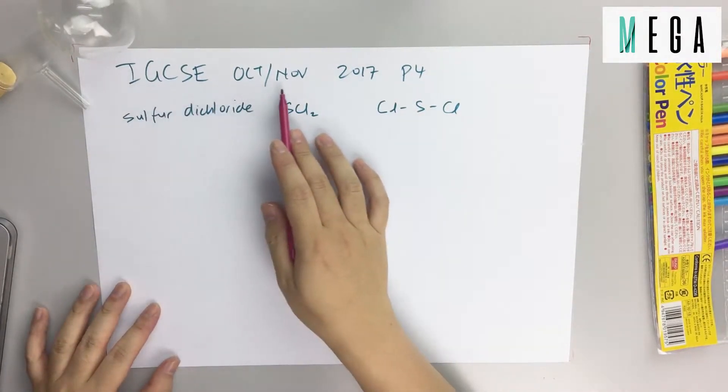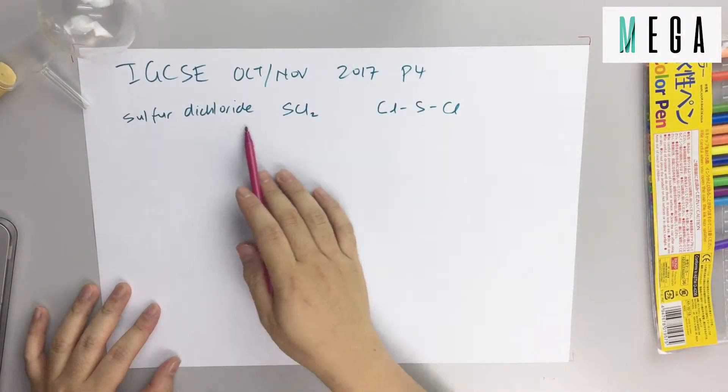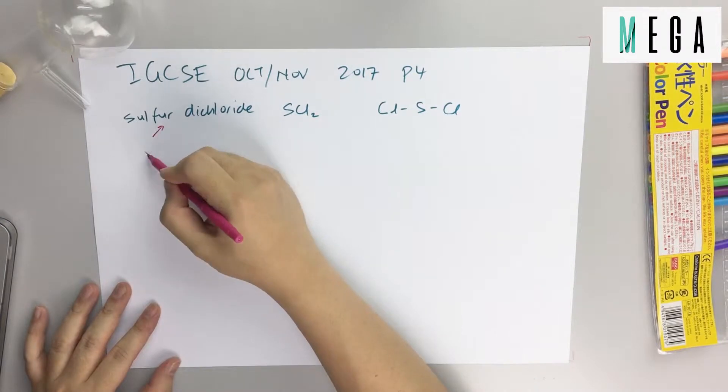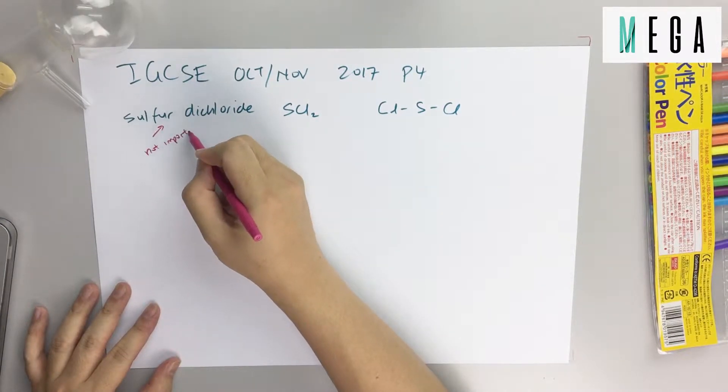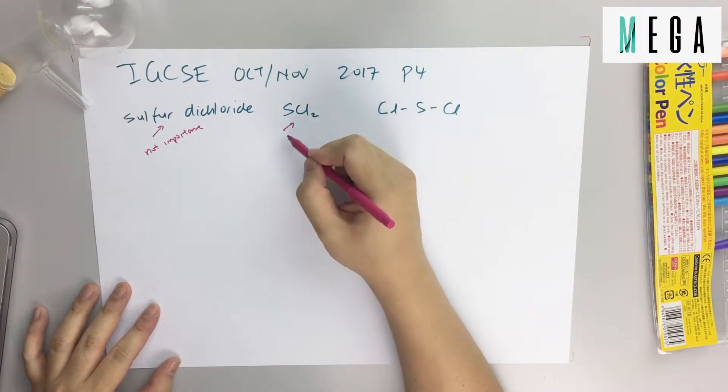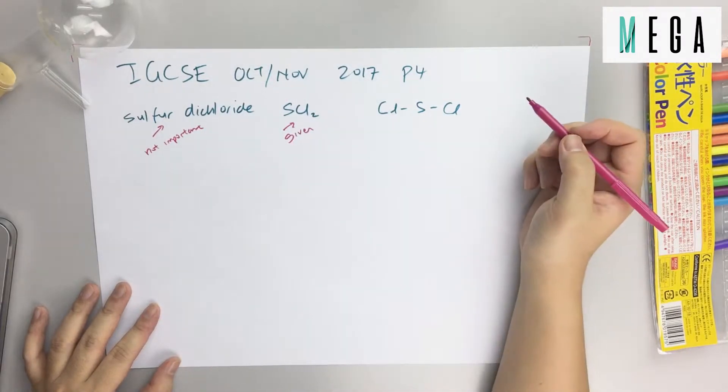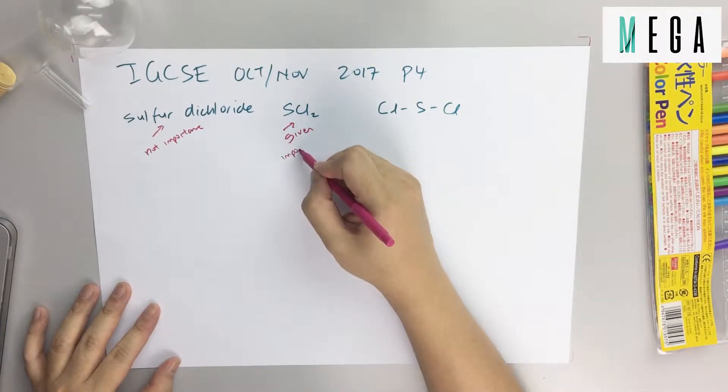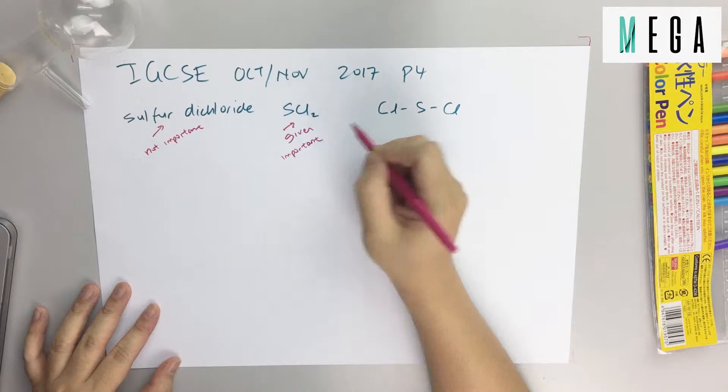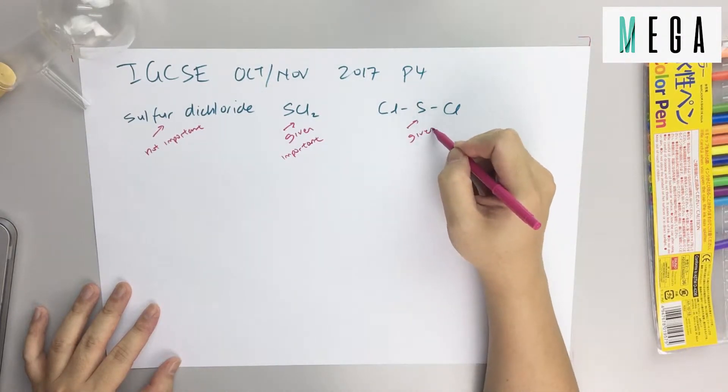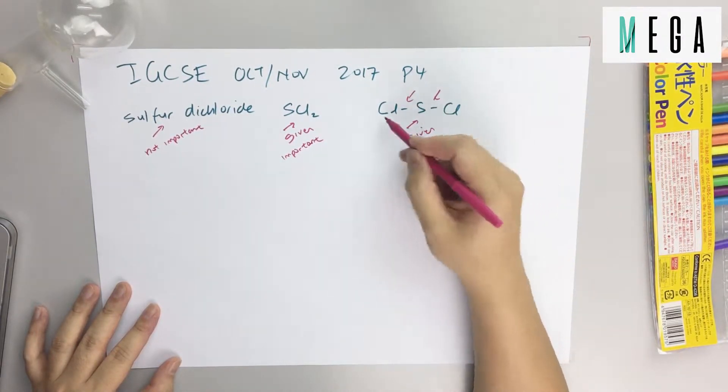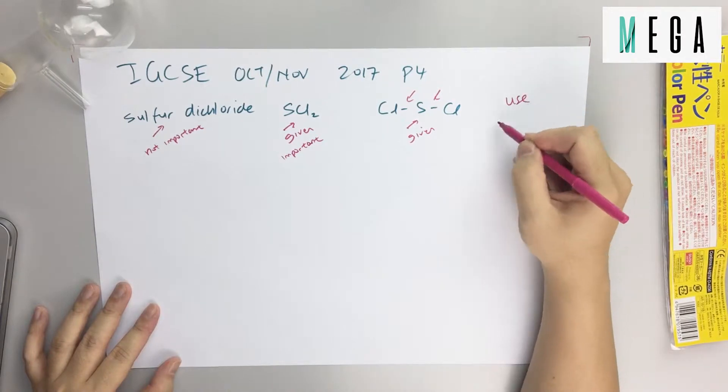This is the last one, IGCSE October/November 2017 Paper 4, sulfur dichloride. They give you the formula SCl2 and a simple structure at the side. IGCSE is very friendly, they give you all these formulas and you can see there's a single bond.